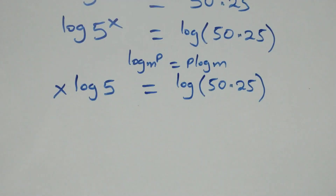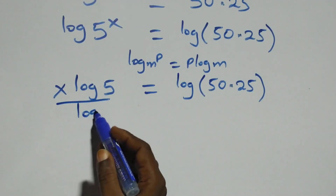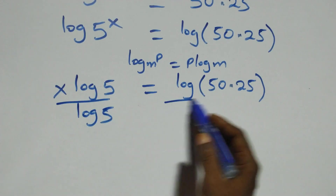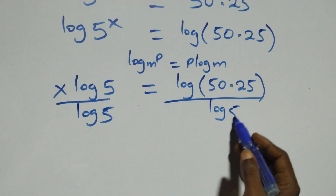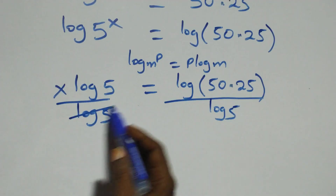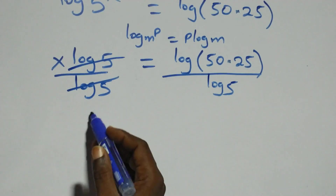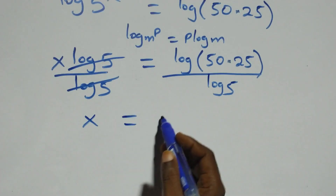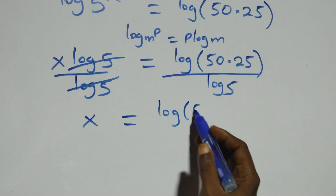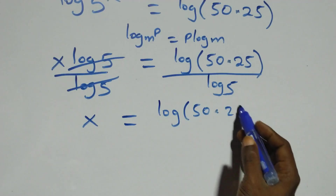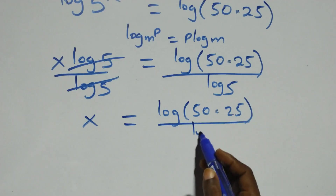The next step: divide both sides by log 5. Log 5 cancels on the left side, and we have x equals to log of 50 times 25 over log 5.